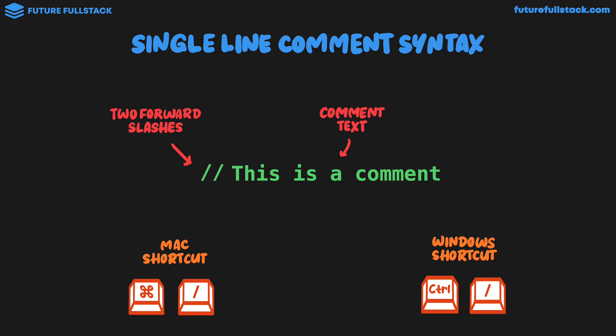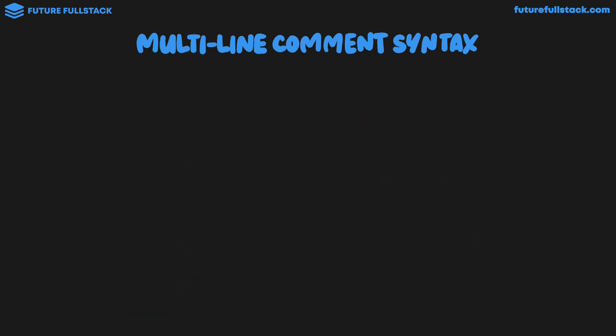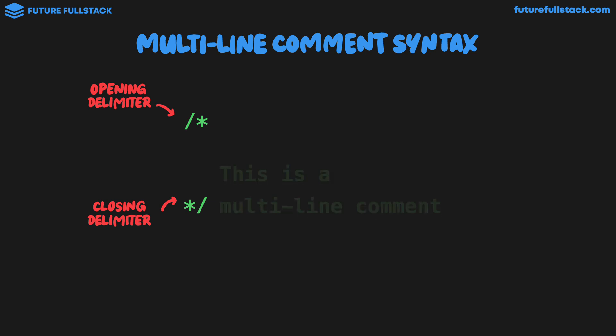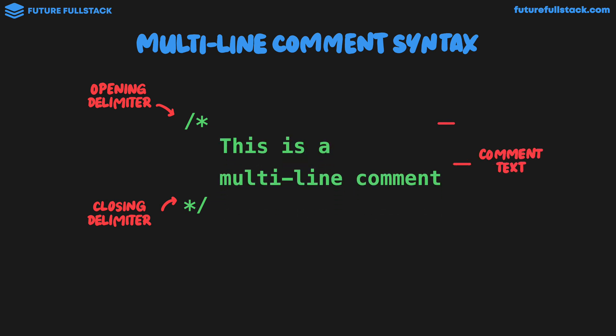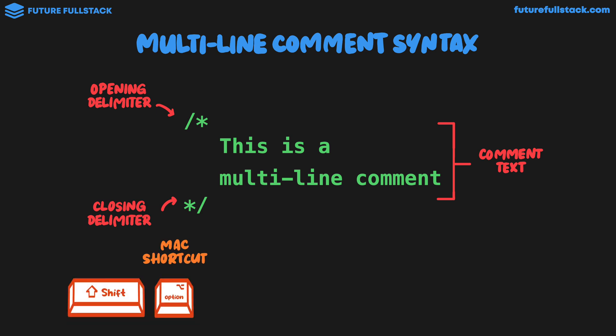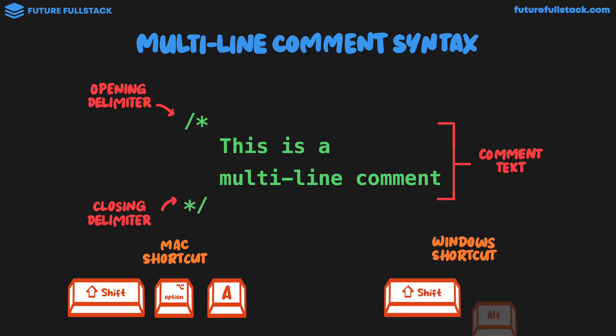The second type of comment is multi-line comment syntax. As the name suggests, this is syntax for comments that span multiple lines. It looks like this: we have an opening delimiter, which is a forward slash followed by the asterisk symbol, and a closing delimiter, which is an asterisk followed by a forward slash. These delimiters wrap our comment text — in this case, 'this is a multi-line comment.' Multi-line comments are useful for larger blocks of text and would commonly be used for longer documentation notes. The Mac shortcut is Shift + Option + A, and the Windows shortcut is Shift + Alt + A.